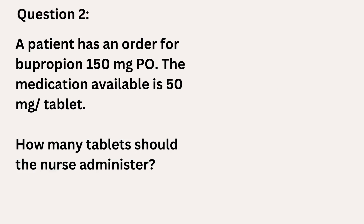Now we're going to move to our second problem. This problem is a little more tricky because the medication is listed, but it won't actually change the way we set up our equation. The problem reads: a patient has an order for bupropion 150 milligrams PO — PO just means by mouth or orally. The medication available is 50 milligrams per tablet. How many tablets should the nurse administer? I want us to figure out what is our desired, what is our have, and what is our quantity in this problem.